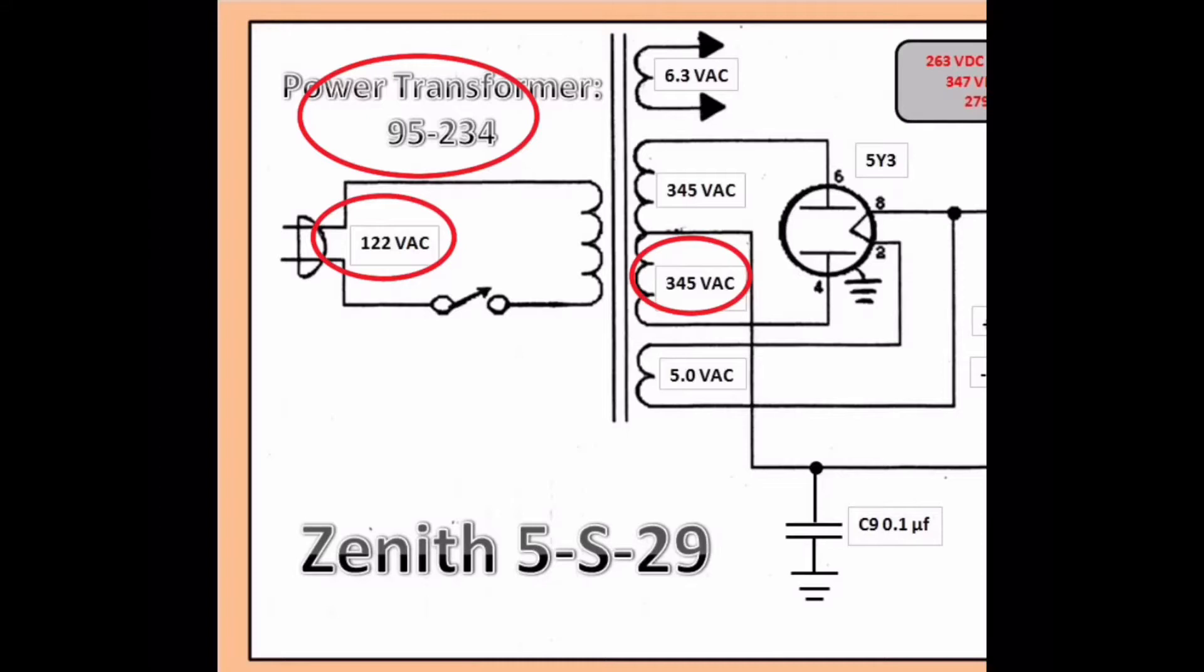Looking at the plates itself, across both around 345 volts AC, and 5 volts AC feeding the filament of the 5Y3, and 6.3 volts to the other filament or heaters for the other tubes within the radio itself.